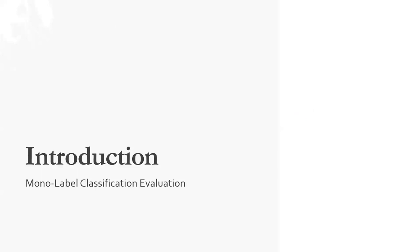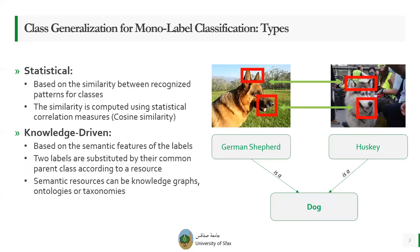We'll begin by defining what we will work on in this research paper. What we will do is study the effect of class generalization on the accuracy rate of monolabel classification algorithms. What we mean by class generalization is the fact that two specific classes are merged together into a general class. For example, German Shepherd and Husky are two dog breeds, so they can be merged as a dog class.